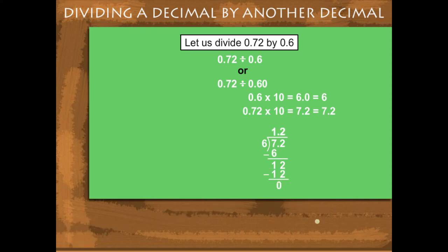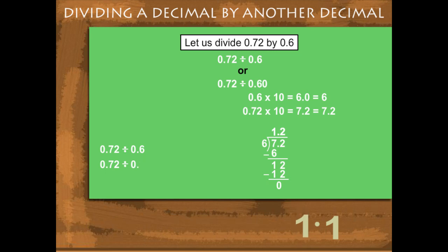So, 0.72 divided by 0.6, or 0.60, gives 1.2.